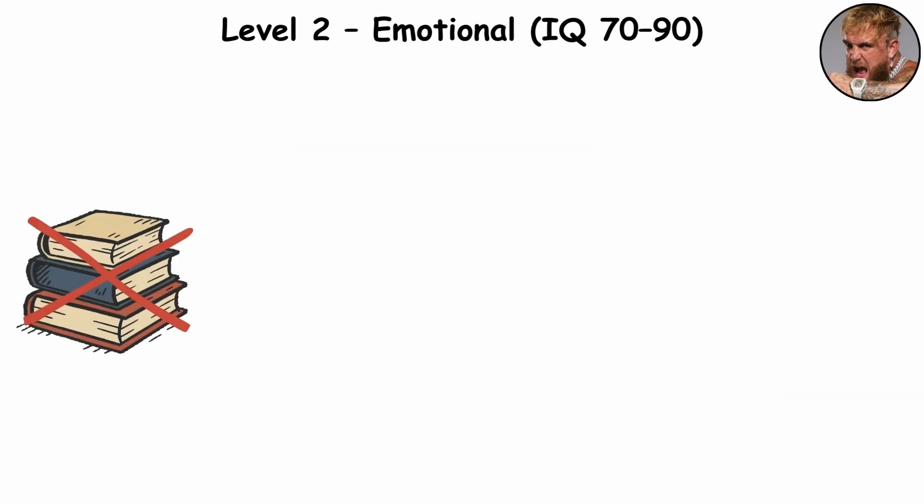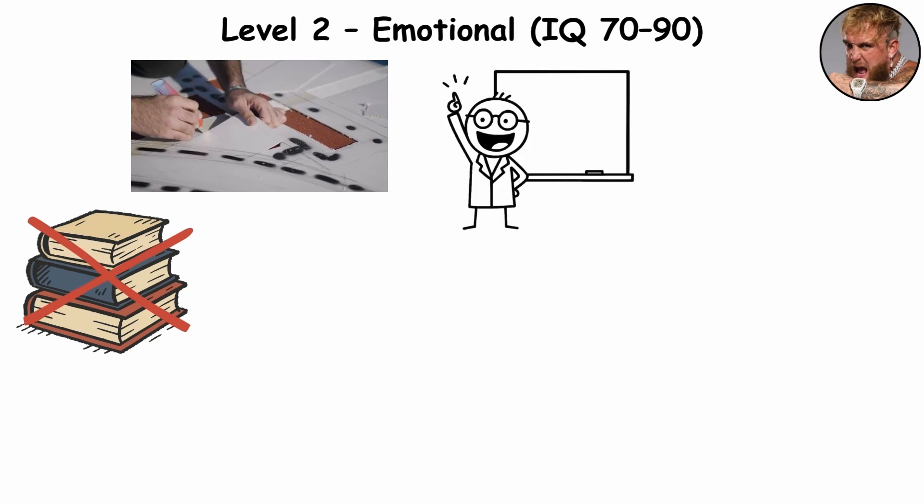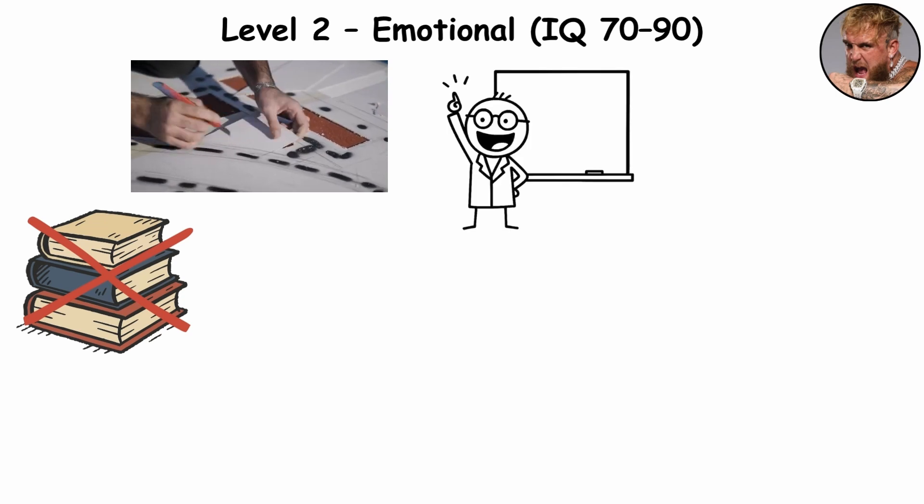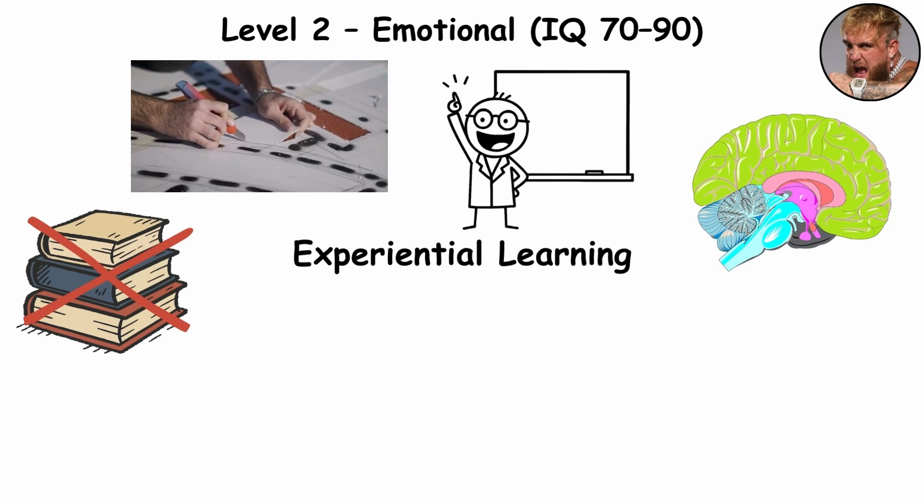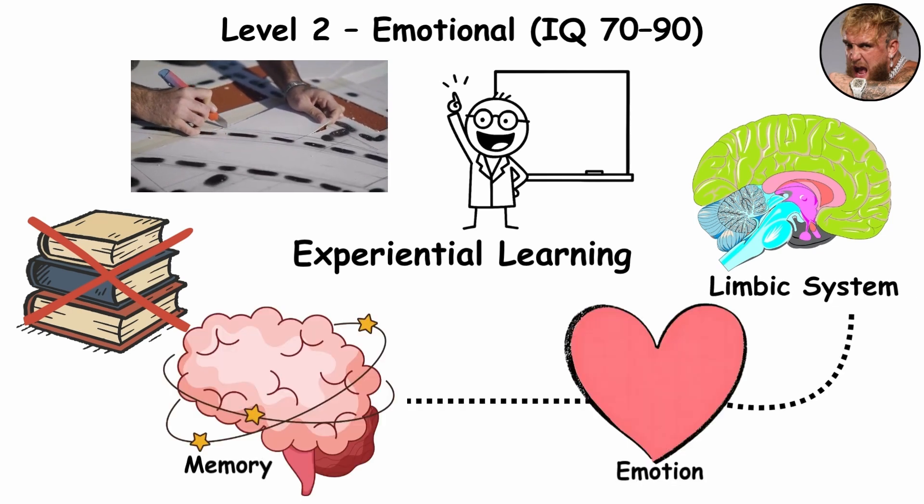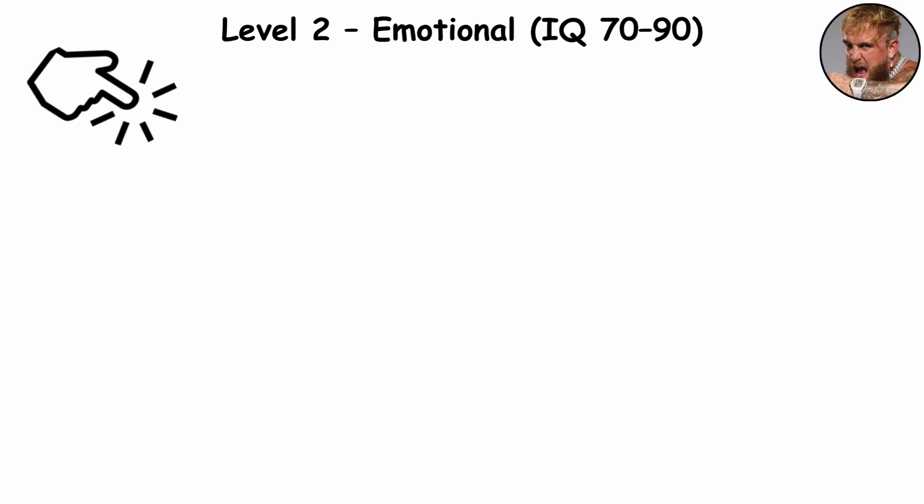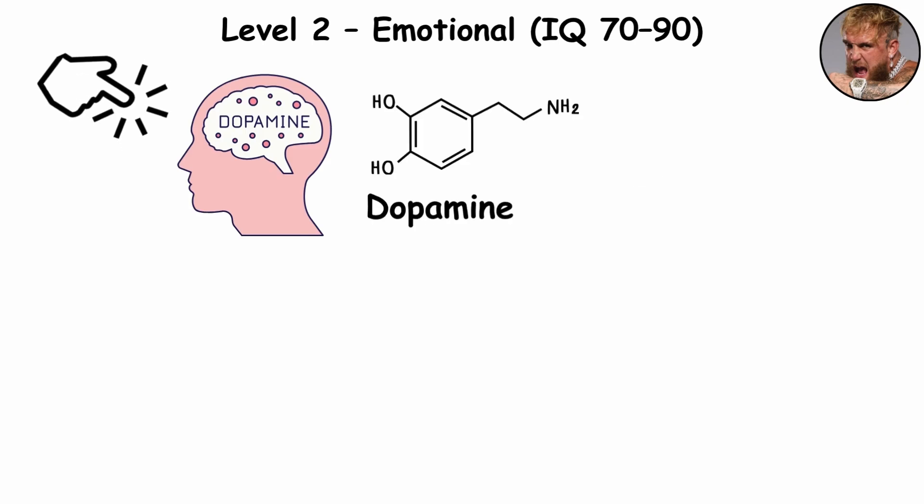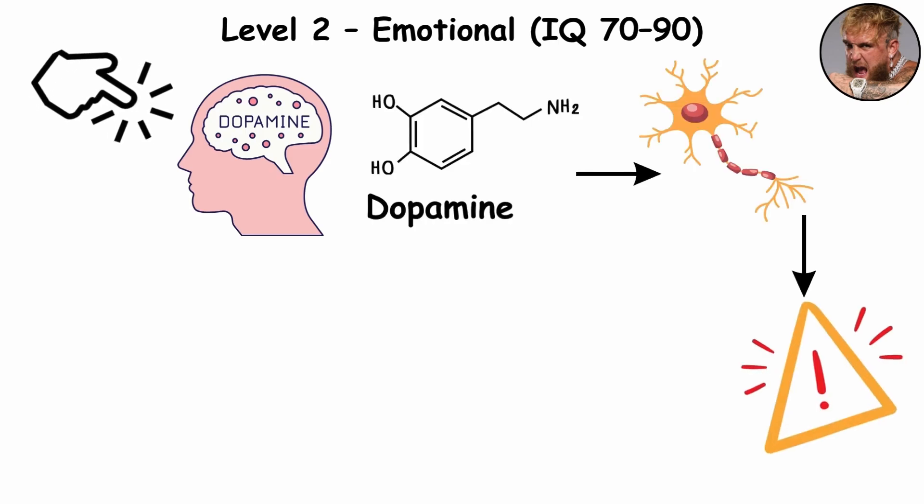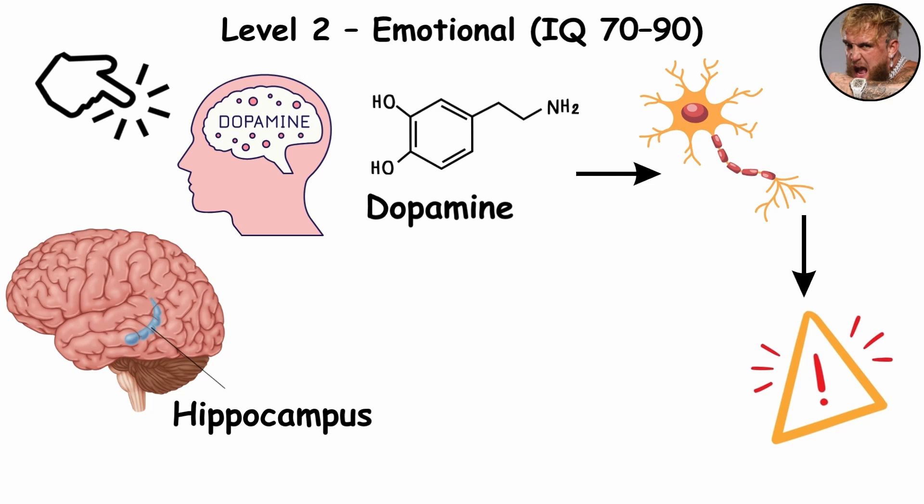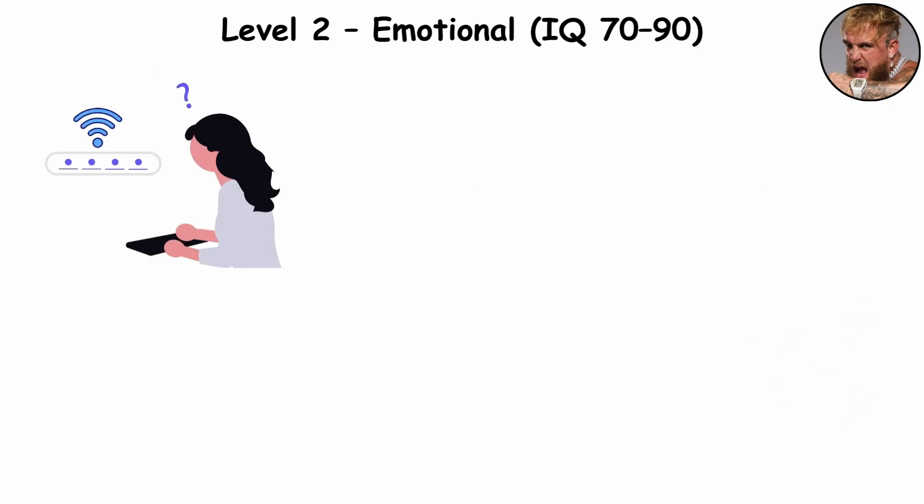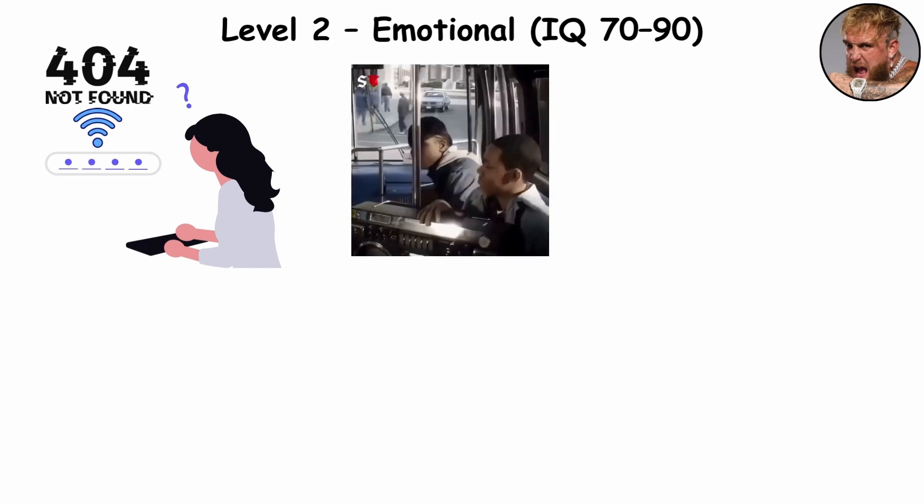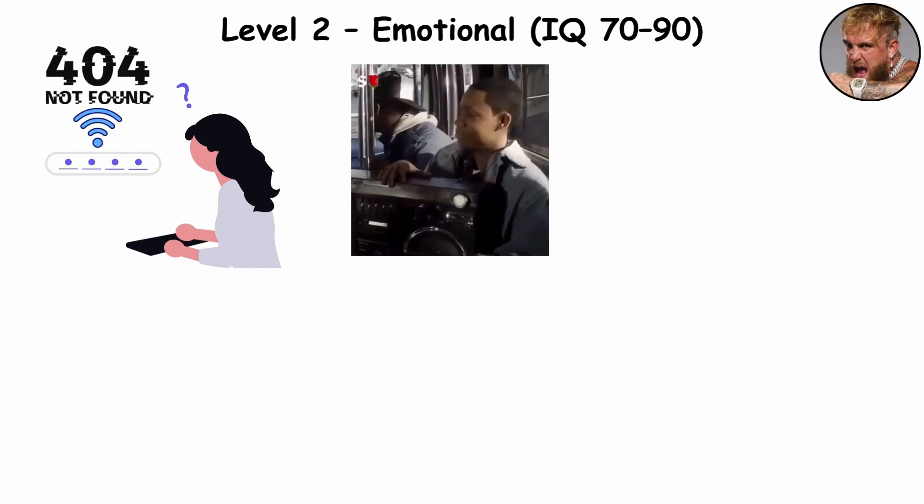They don't learn from theory. They learn by doing, feeling their way to understanding. Scientists call this experiential learning. The part of the brain that powers this is the limbic system, which links emotion to memory. When something feels important, the brain releases dopamine, a chemical that tells your neurons to pay attention. Then the hippocampus, the brain's memory librarian, files it neatly away. That's why someone here might forget a Wi-Fi password five times, but never forget the song that played when they met their best friend.